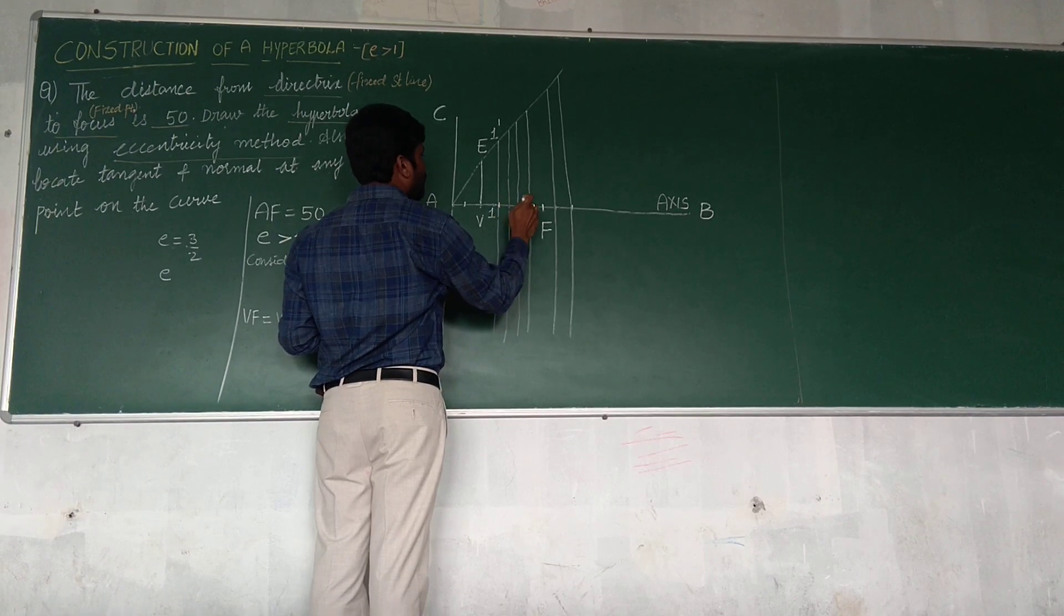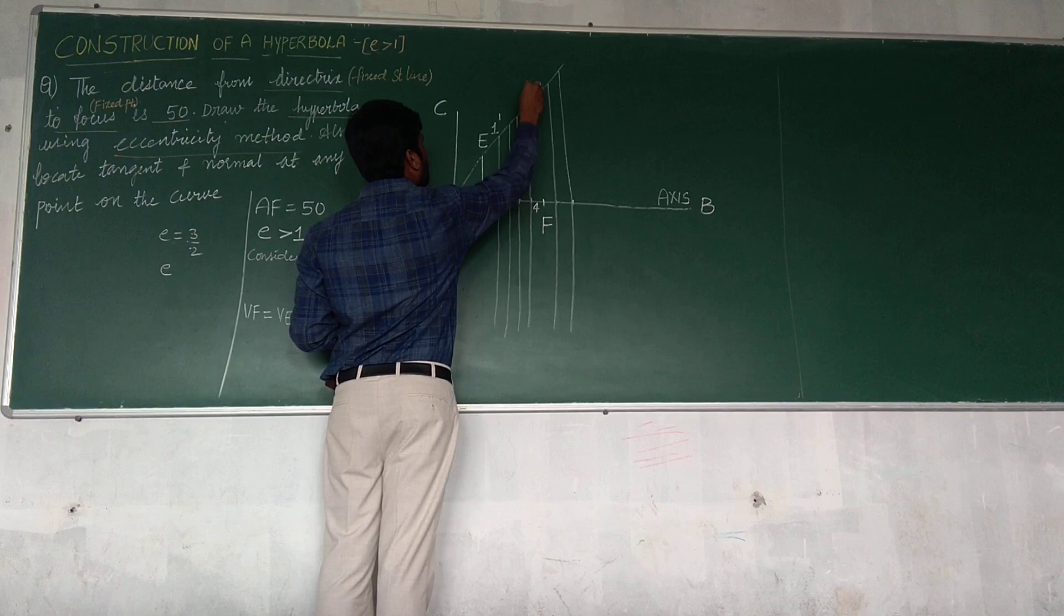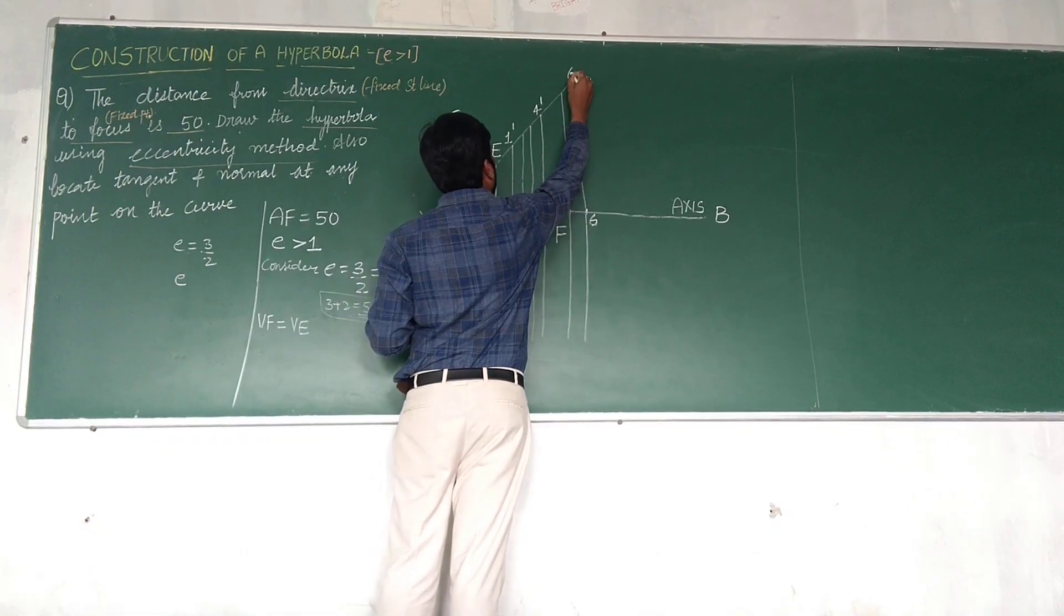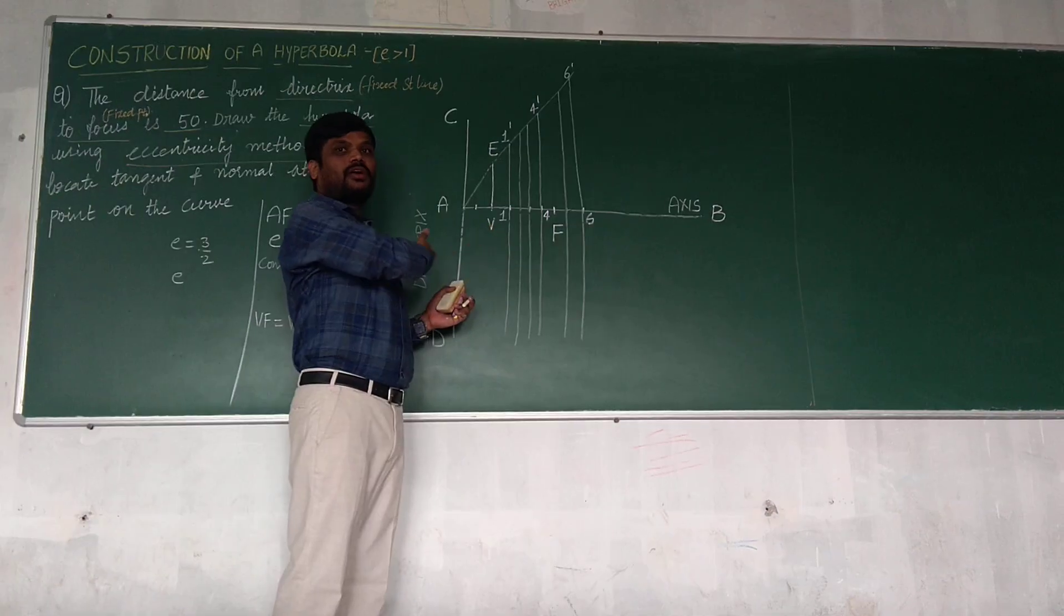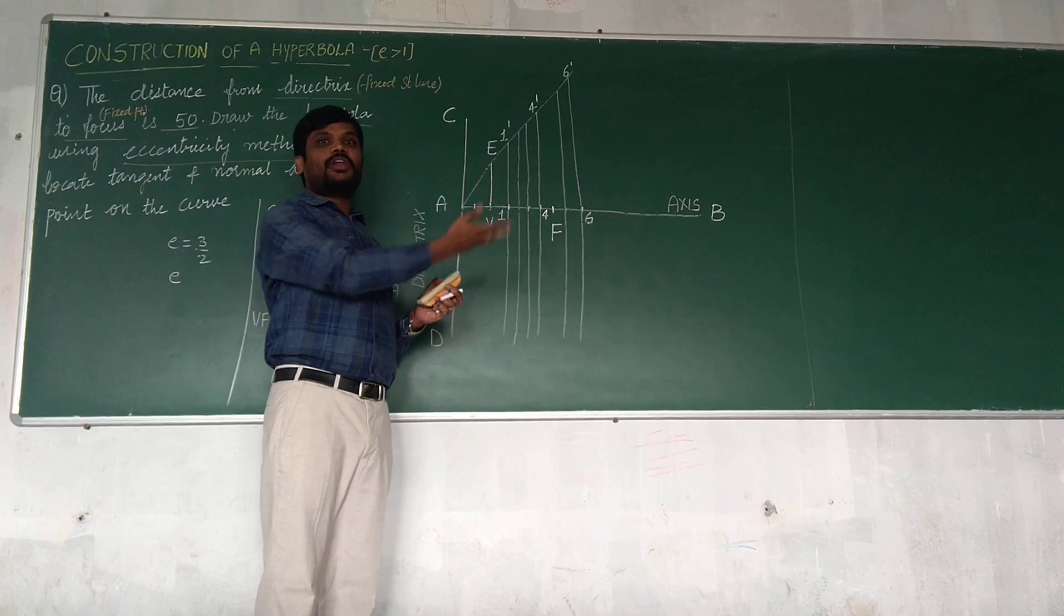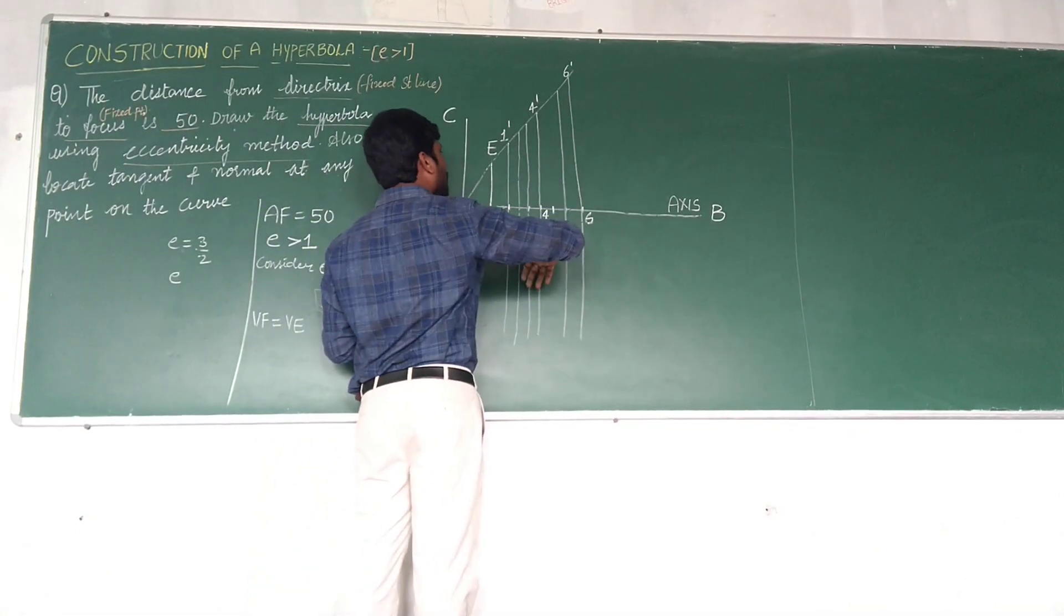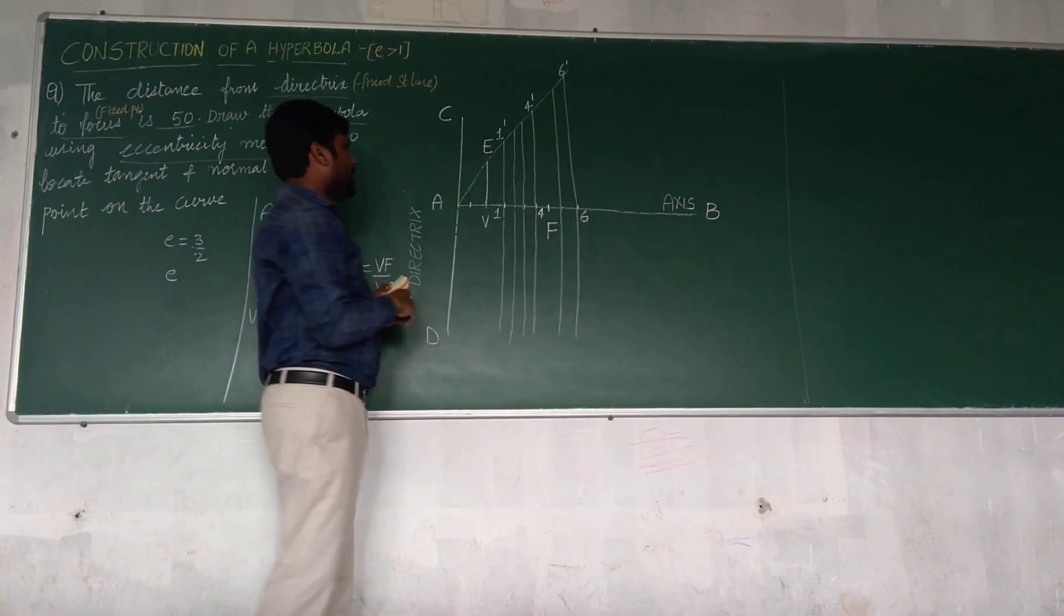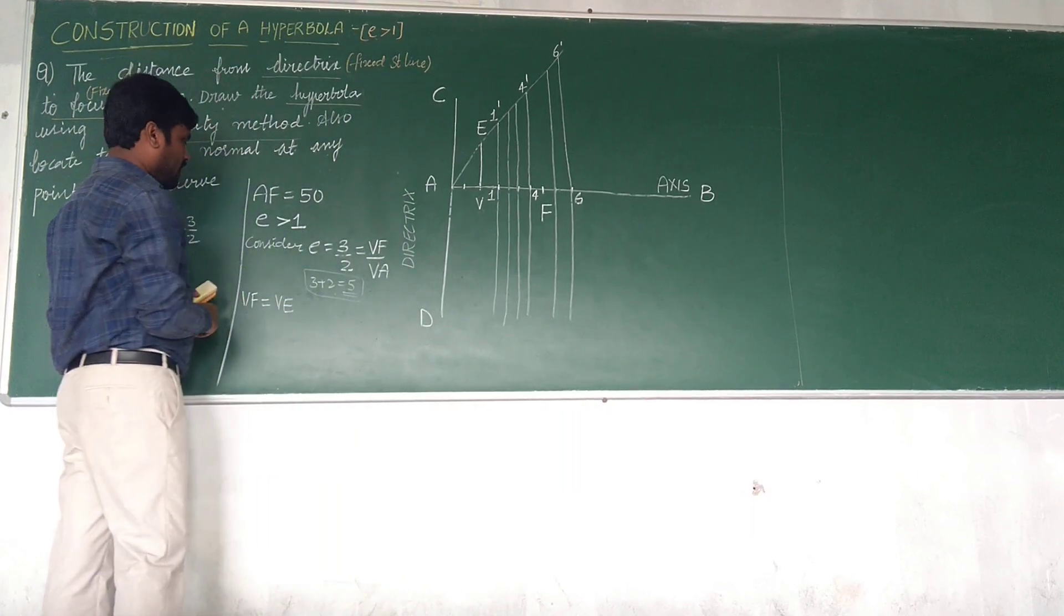This is 1 and this will be 1 dash. Similarly 1, 2, 3, 4, so let this be 4 and this is 4 dash and 5, 6 and this is 6 dash. It doesn't mean you have to draw only 6 points, you can draw any number of points. The more number of points you draw, you will be getting a very smooth final curve.